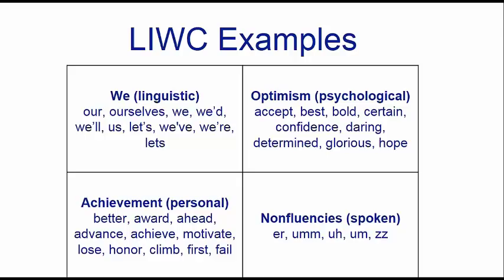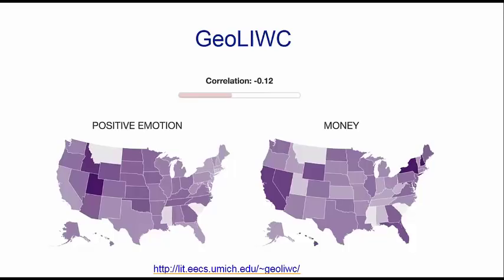Here is an example application built on top of the Linguistic Inquiry and Word Count: we looked at the presence of word categories across the 50 U.S. states — for instance, how words reflecting positive emotions are distributed, and how money-related words are distributed. We can then ask whether money brings happiness, by correlating positive emotion and money across states. The answer is no — the correlation is negative.